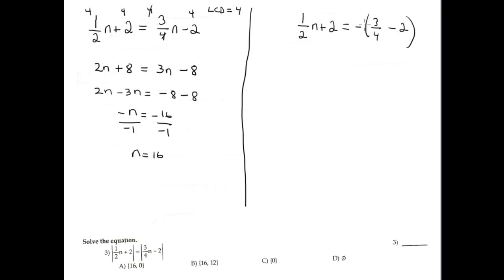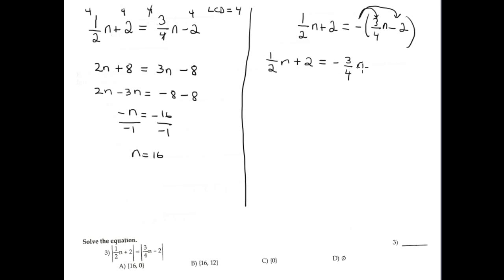For the second solution, multiply the right-hand side by negative one using the property of multiplication. So one half m plus two equals negative three over four m plus two — the negative multiplied through this part.